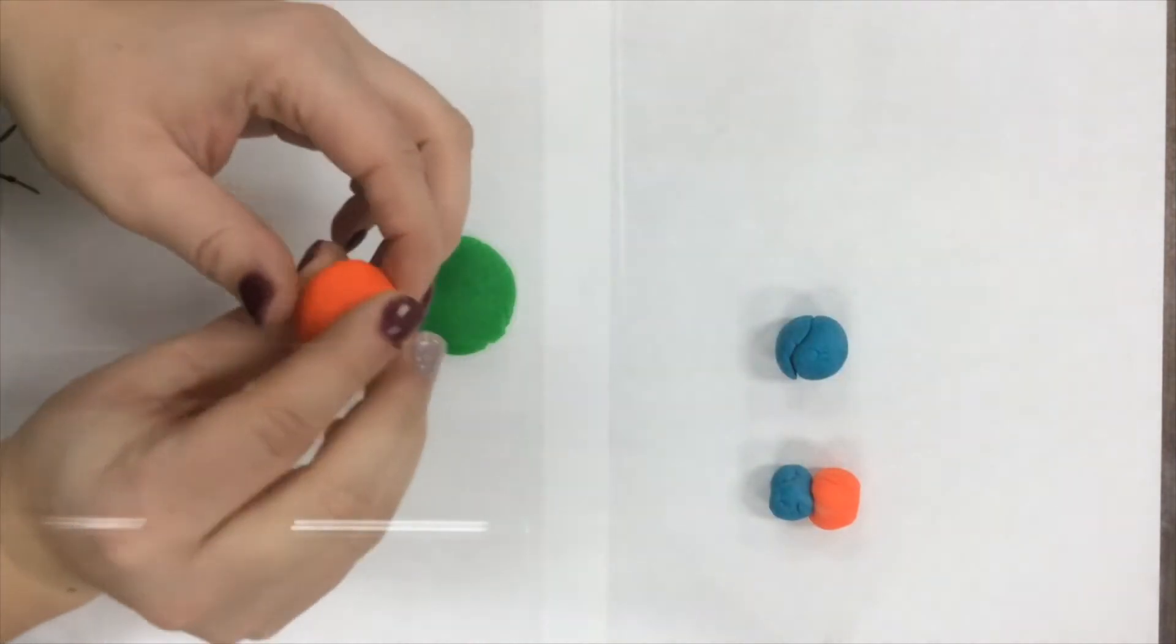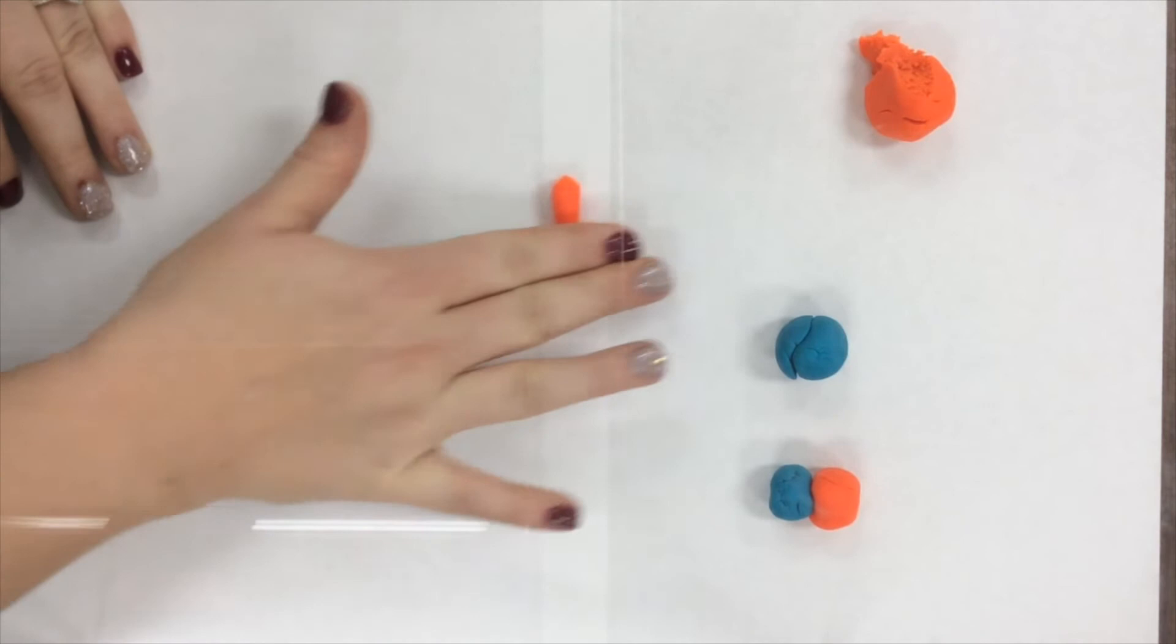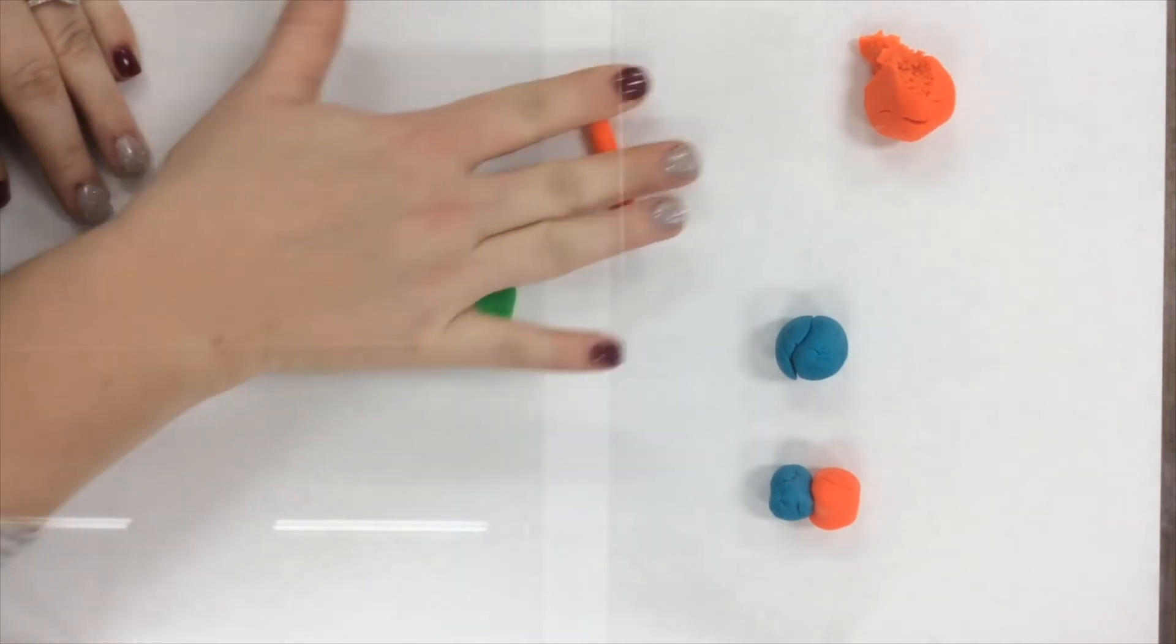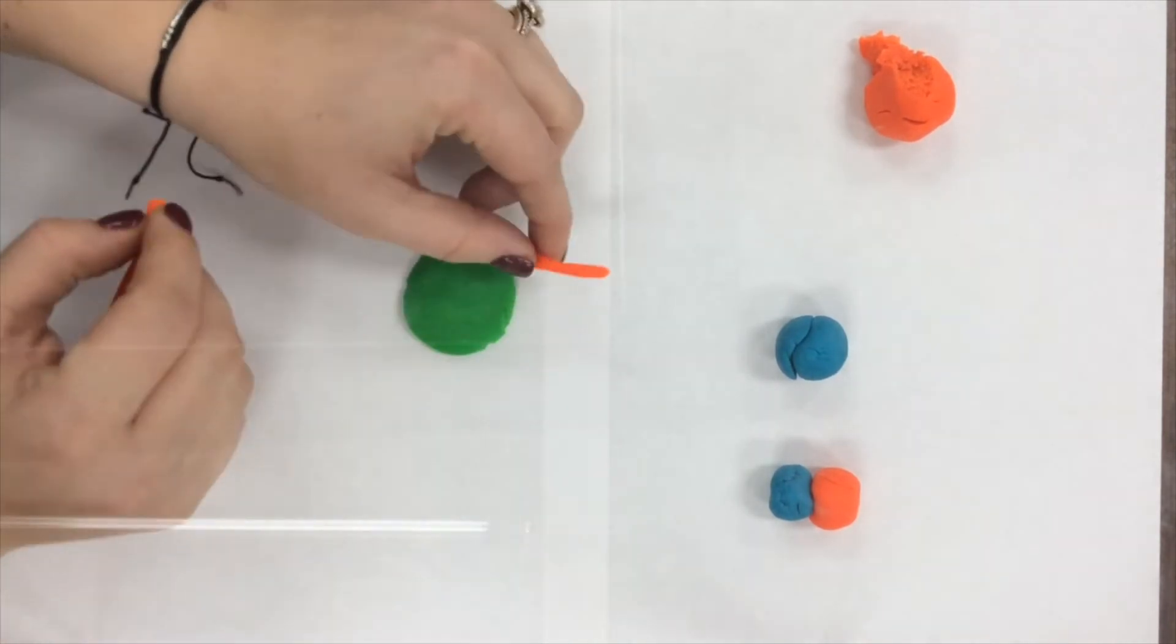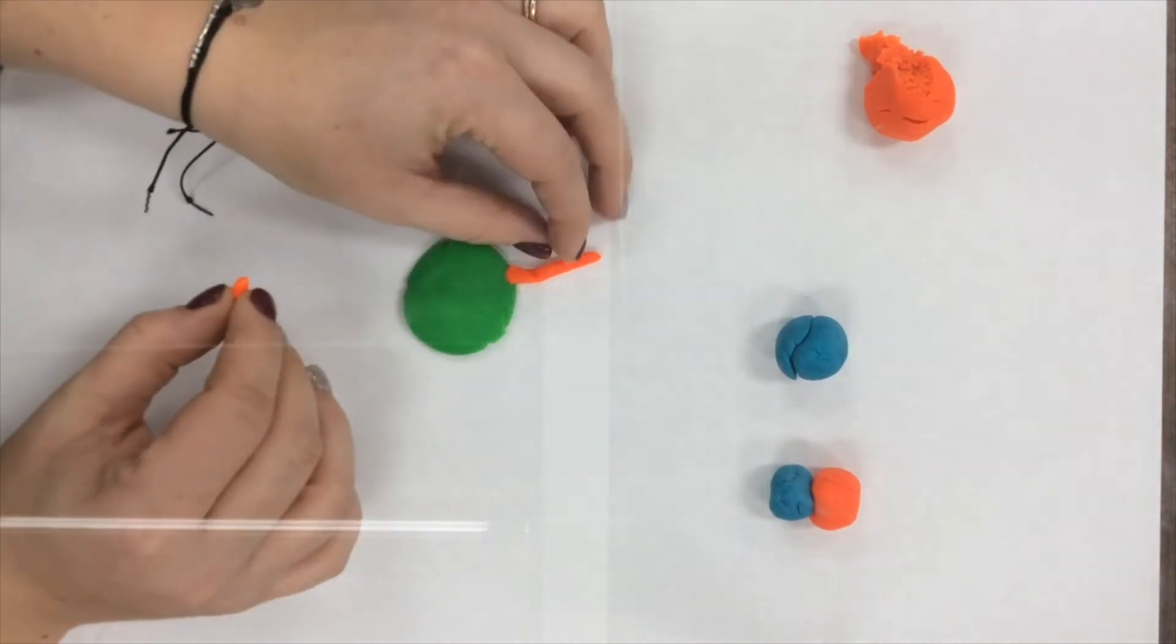With the second color of clay, add extensions to the soma. These extensions represent dendrites. I use the color orange. Then I added the dendrites in a tree root-like manner to the green soma.